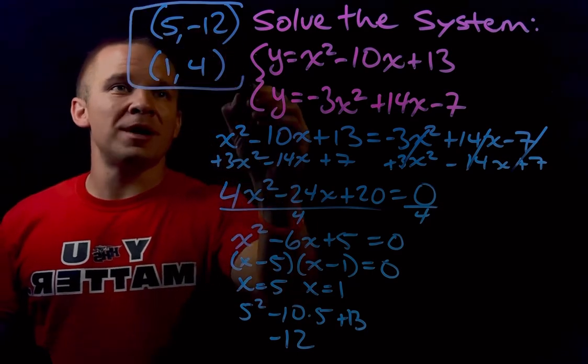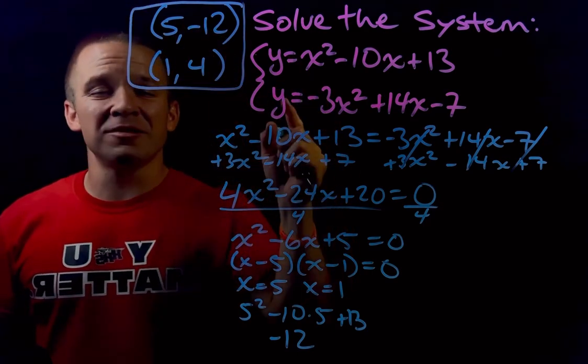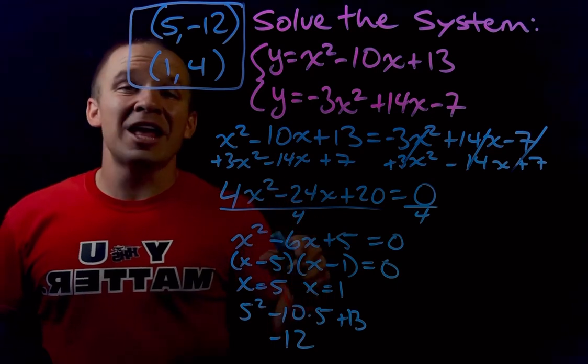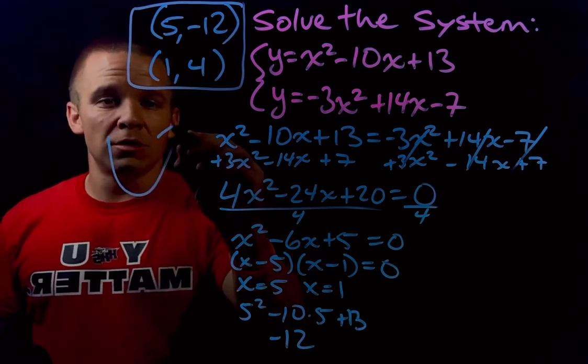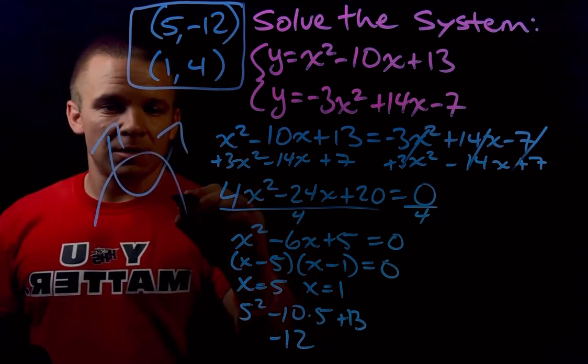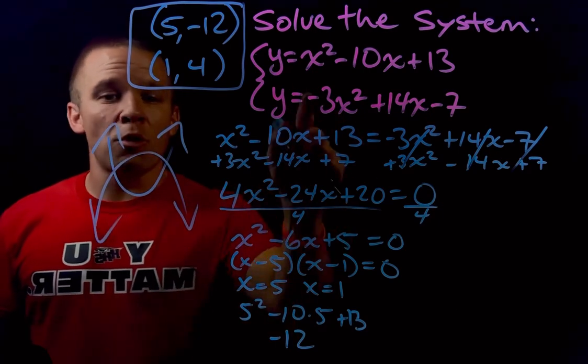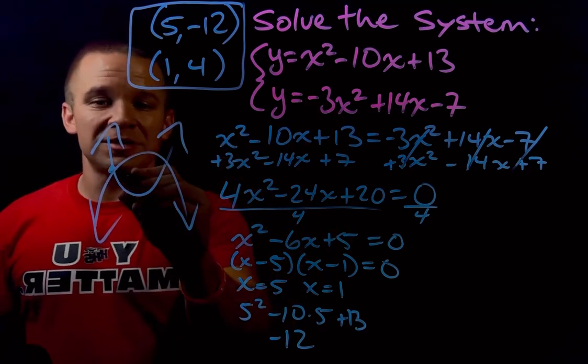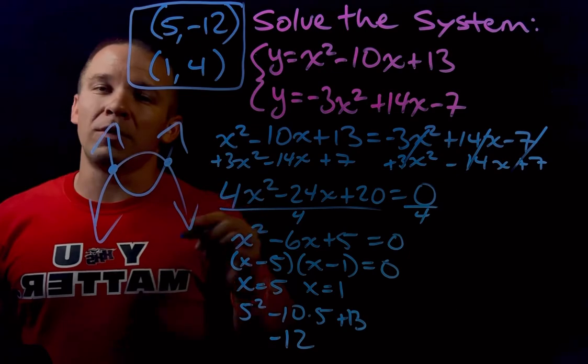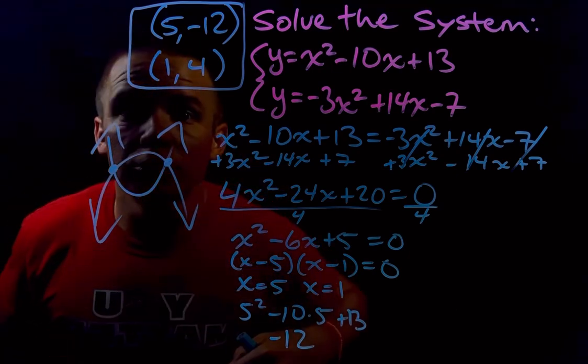These are my two solutions to this system. And what is that actually going to look like? It's gonna look like the intersection of two parabolas. One's positive, one's negative facing down. They're gonna intersect at these two points. That is pretty dope.